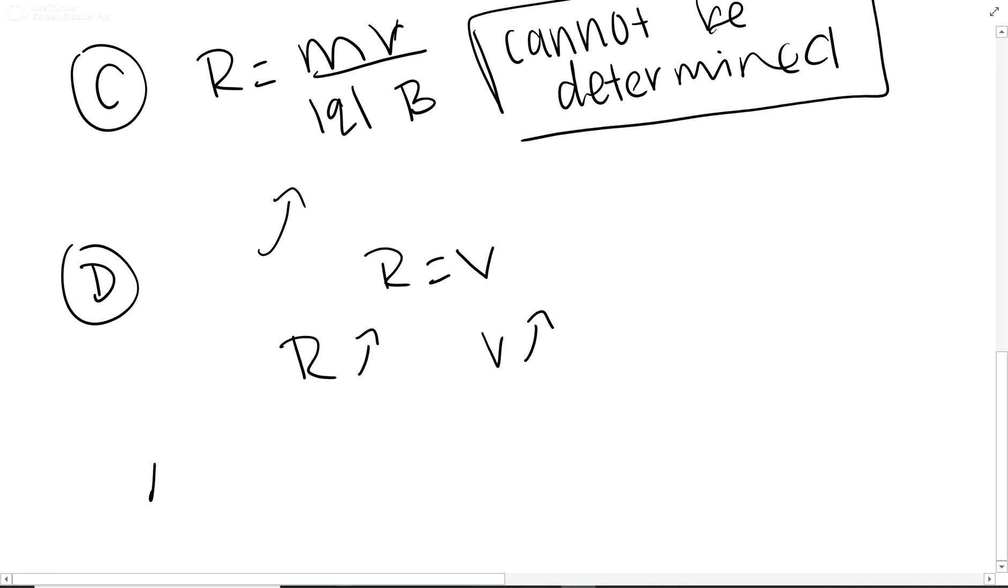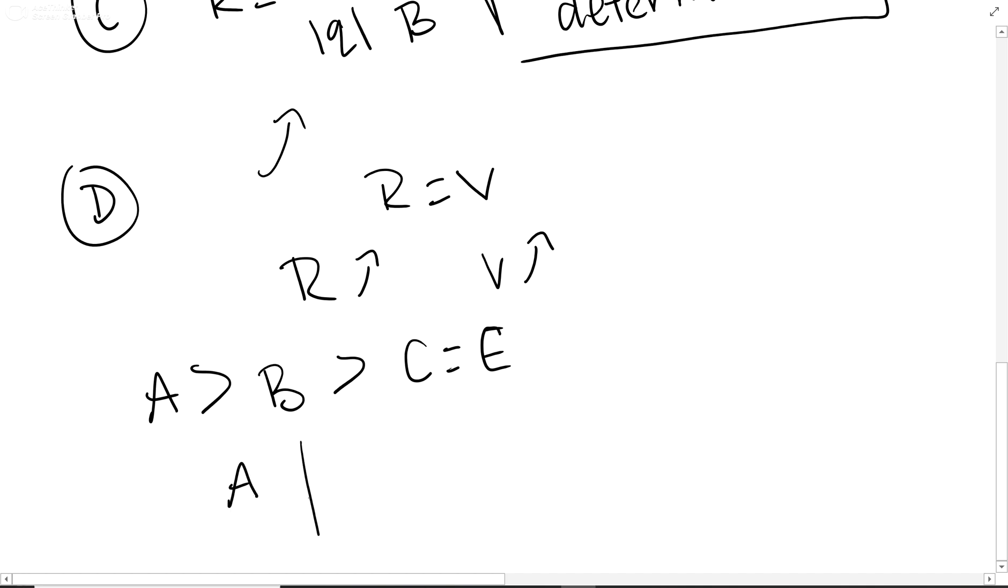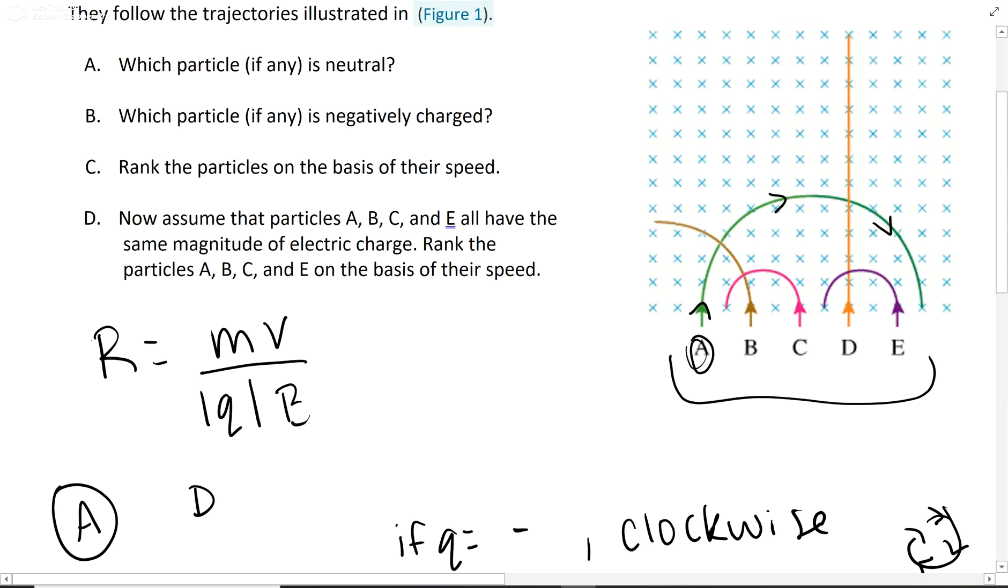If we look at our radiuses, A is greater than B is greater than C, which equals E. So you're probably going to put something like this in those boxes, just based on the radius. A is the biggest, and then here comes B here, and then C and E are the same.